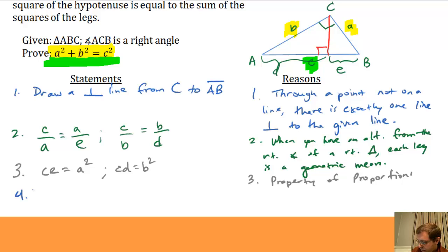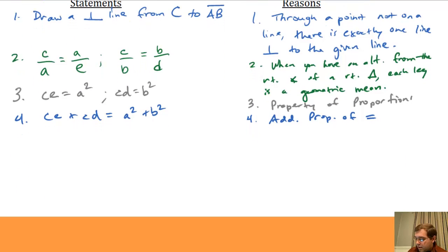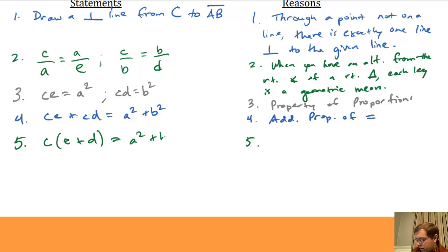Now I'm going to add these two equations together, taking the left-hand side of each: CE plus CD, and setting that equal to the sum of the right-hand sides: A squared plus B squared. What allows me to add two equations together like that? The addition property of equality. Then I'm going to factor out C on the left-hand side, which is the distributive property in reverse. So the reason is just the distributive property.